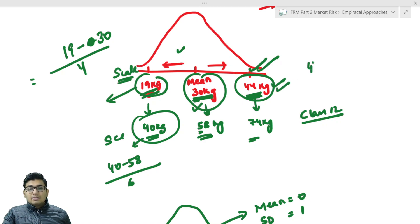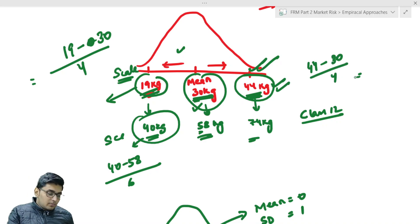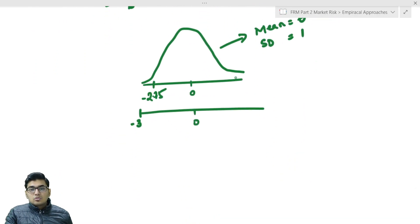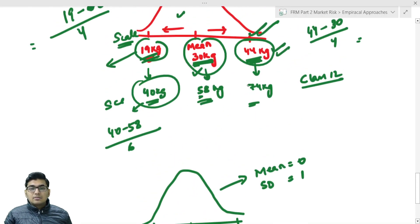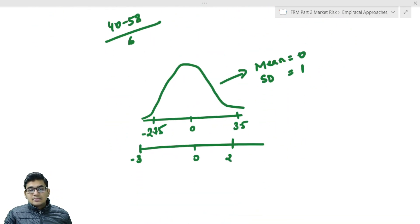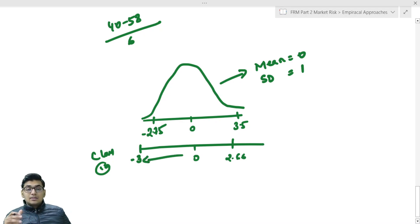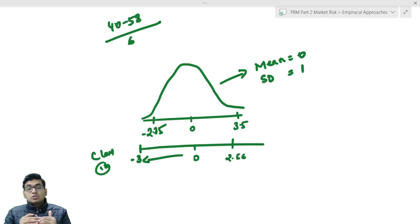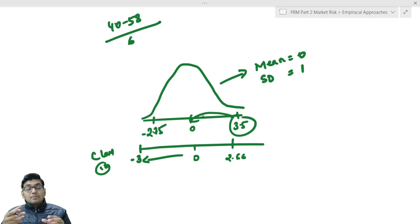For the upper values: 44 minus 30 divided by 4 equals 14 divided by 4, that is 3.5. And 74 minus 58 divided by 6 equals 2.66. So we can now say that the thinnest person relative to the mean is in class 12 (z = -3), and the fattest person relative to the mean is in class 6 (z = 3.5). By bringing them to a common scale, we can compare — that is why we convert normal distribution to standard normal distribution.